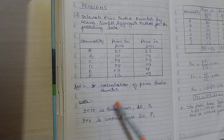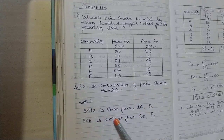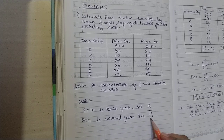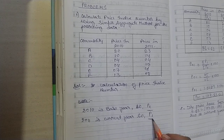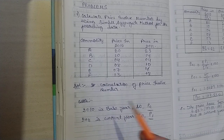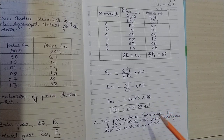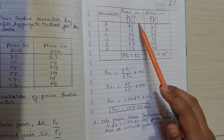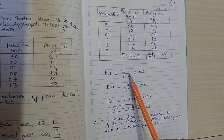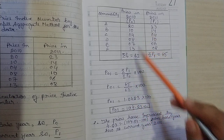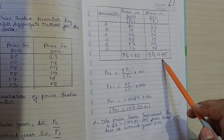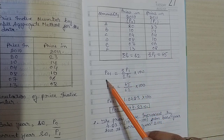In the calculation of the price index number, note that 2010 is the base year — considered as P₀ — and 2011 is the current year — considered as P₁. Zero stands for base period and one stands for current period. Set up the table with commodities, prices in 2010 (base period), and prices in 2011 (current period). The total of all prices in 2010 comes to 62 and the total of all prices in 2011 comes to 65.